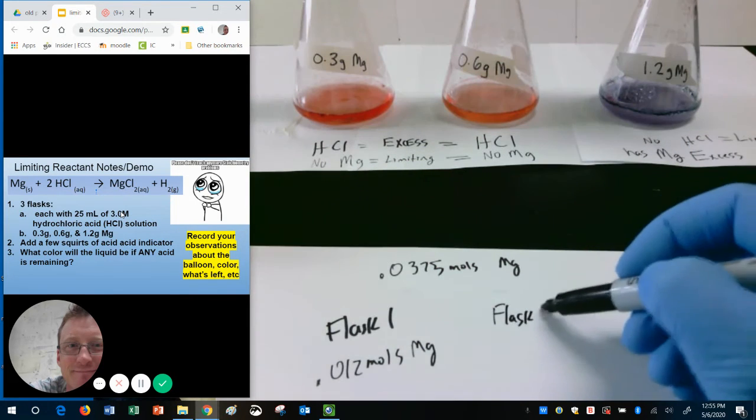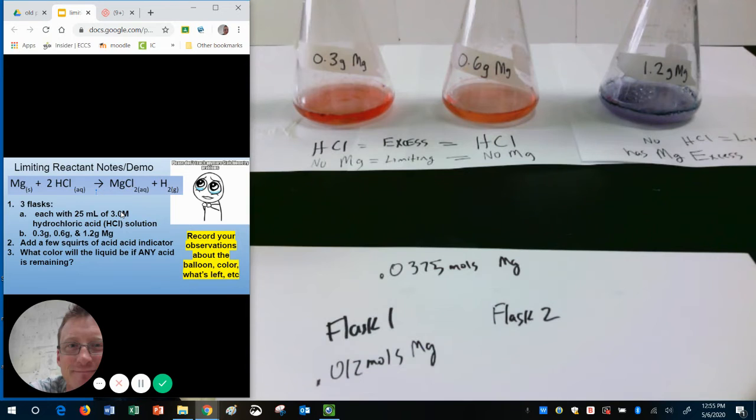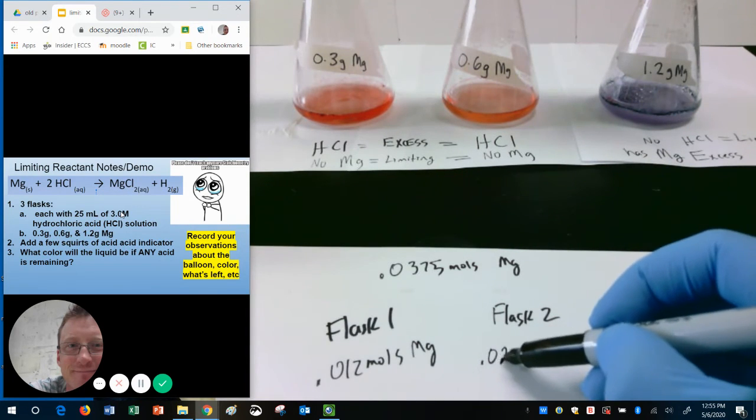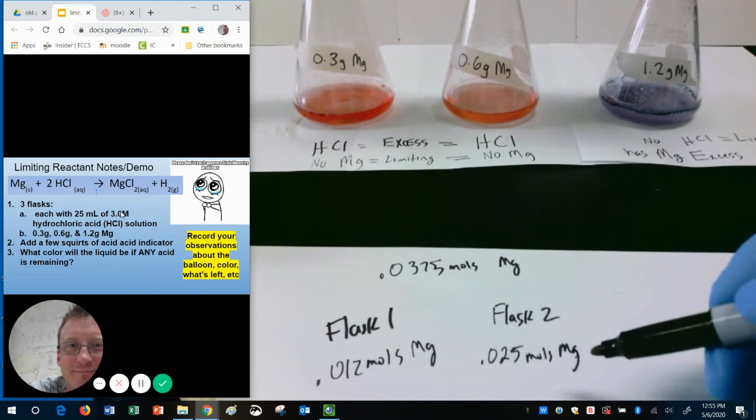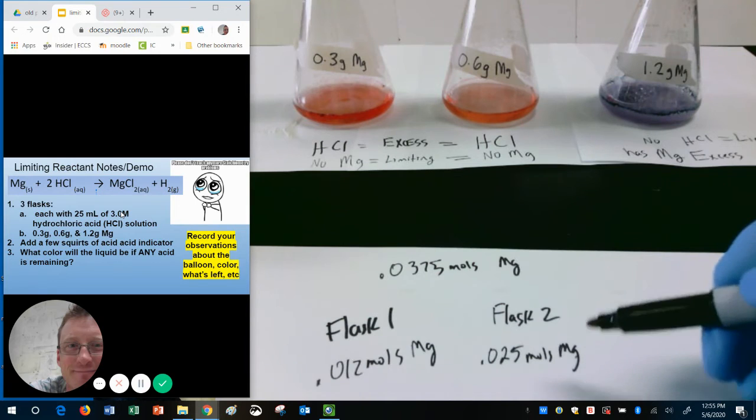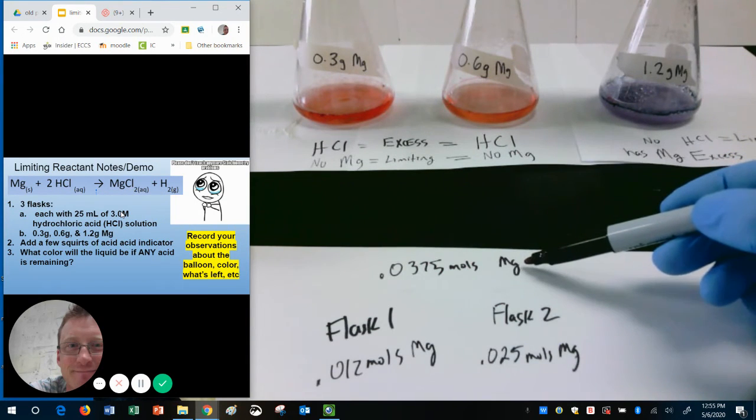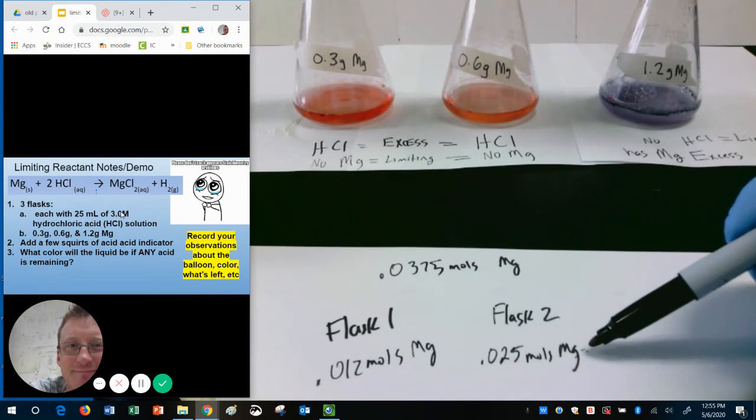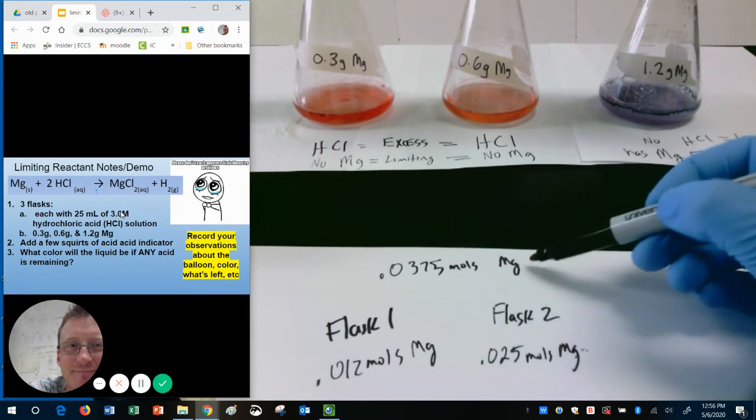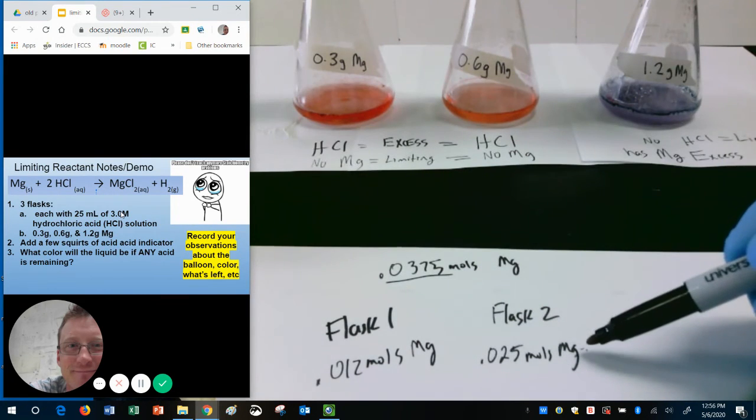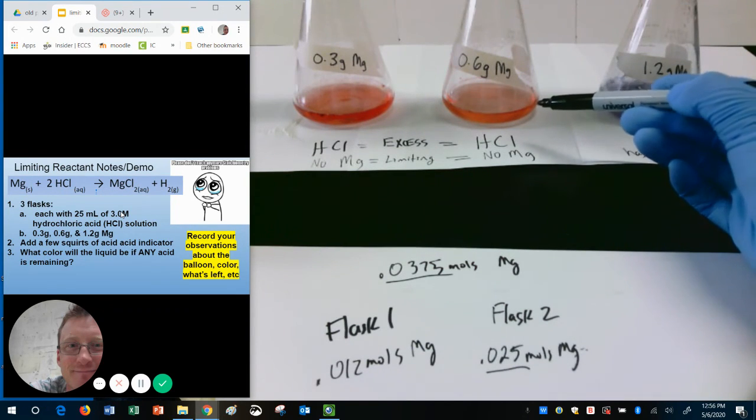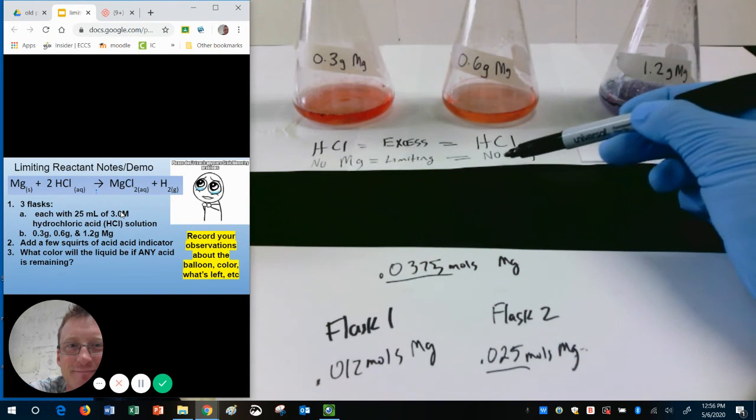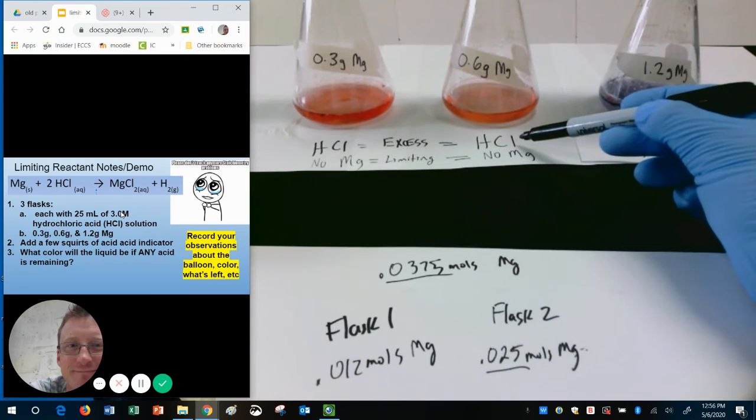Flask two. How many moles of Mg did we have in flask two? We had 0.025 moles of Mg. Well, how much acid do we have? We have enough to react with 0.0375. Well notice this is still smaller. In other words, we have more acid than we need. We have enough acid to react with this much Mg, but we only have this much. 0.025 is smaller. That's why in our second flask, Mg is limiting. It ran out. We had extra acid, HCl.